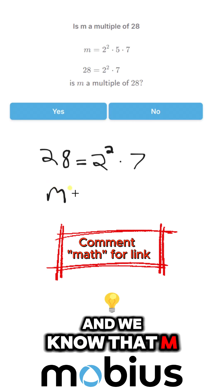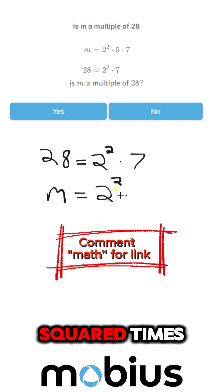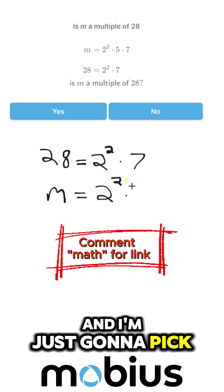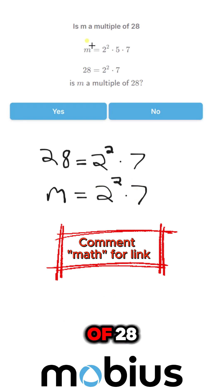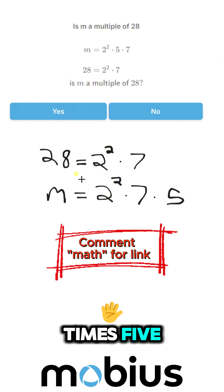And we know that m - I'm going to rewrite this here - m has two squared times, and I'm just going to pick the factors that are already part of 28: two squared times seven times five.